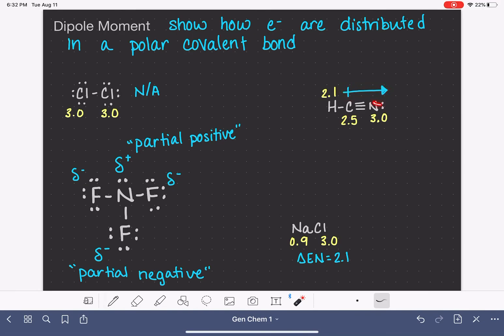This is the other way that we represent the dipole moment. You can use either these symbols or you can use the arrow, whichever one you prefer. For some molecules, it's easier to draw the arrows, and for other molecules, it's a little bit harder to draw the arrows.